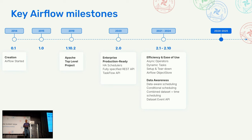Ash and Kaxil worked on Scheduler HA. Yarek, Kamil, and Tomek worked on the REST API. The Taskflow API was donated by the community, and that was a key set of changes done as part of Airflow 2.0. We also did the split of provider releases, which I think was one of the smarter things we actually did, leading to provider releases happening almost every two weeks now, generally shepherded by Elad.